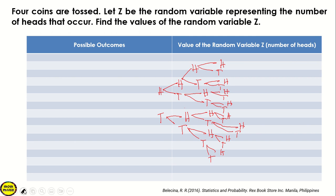Let's follow the arrangement from the top. We have 4 heads: HHHH. Next, 3 heads: head-tail-head-head — we trace through here. Then head-head-tail-head, and head-head-head-tail, and head-head-tail-tail. We're done with those branches.